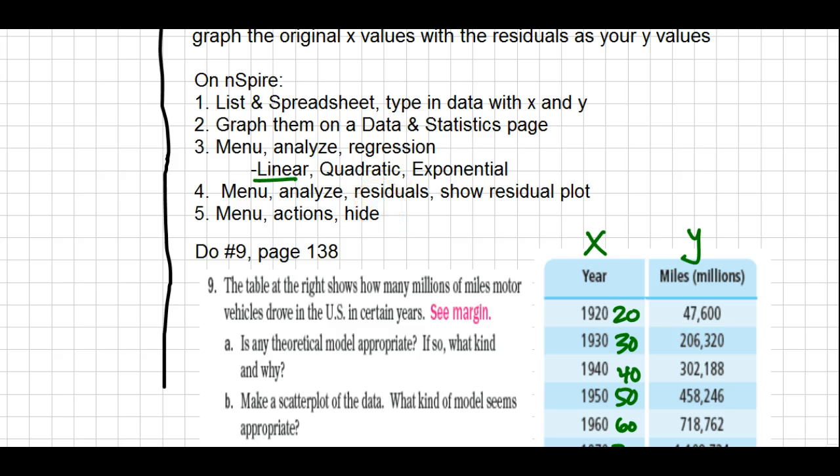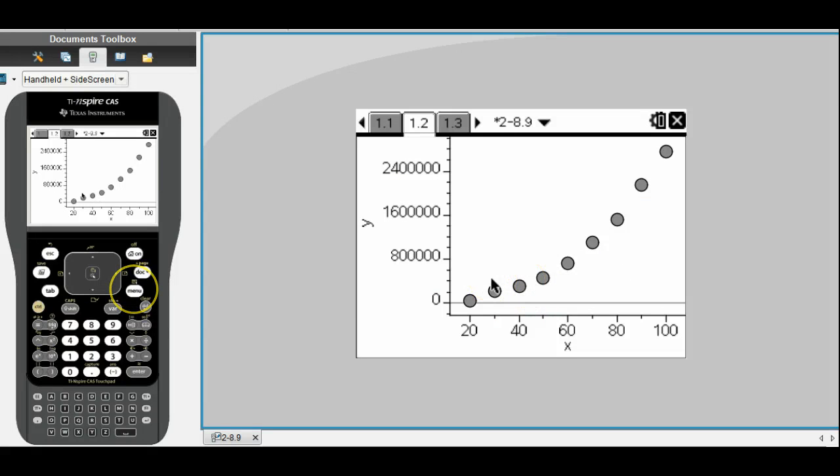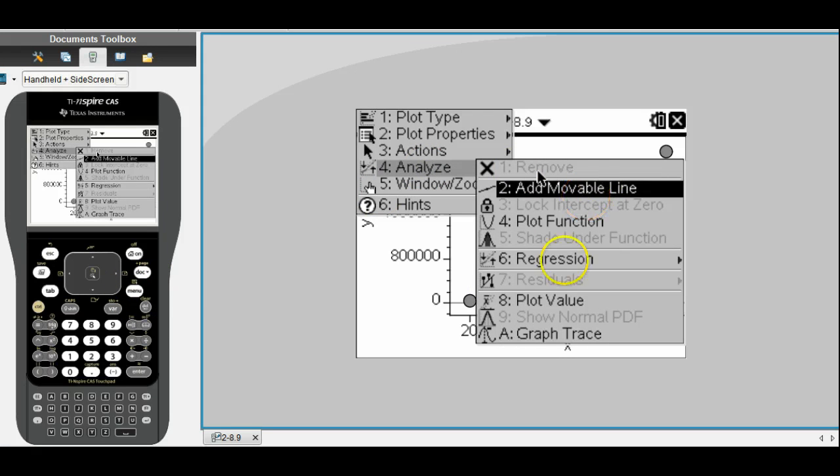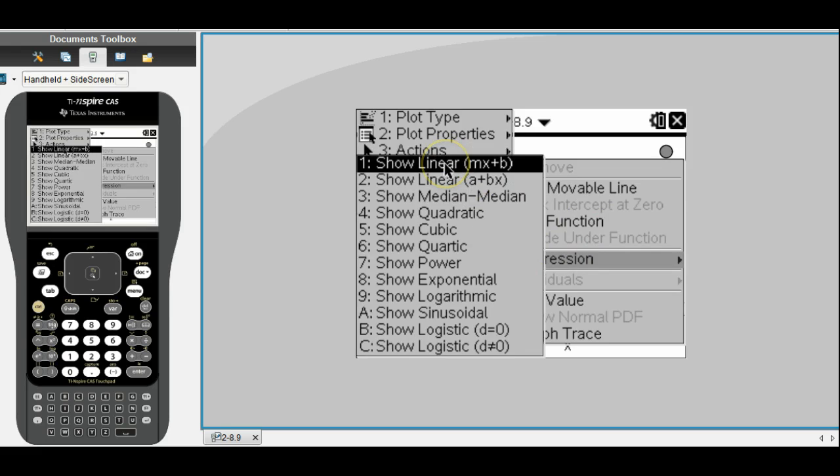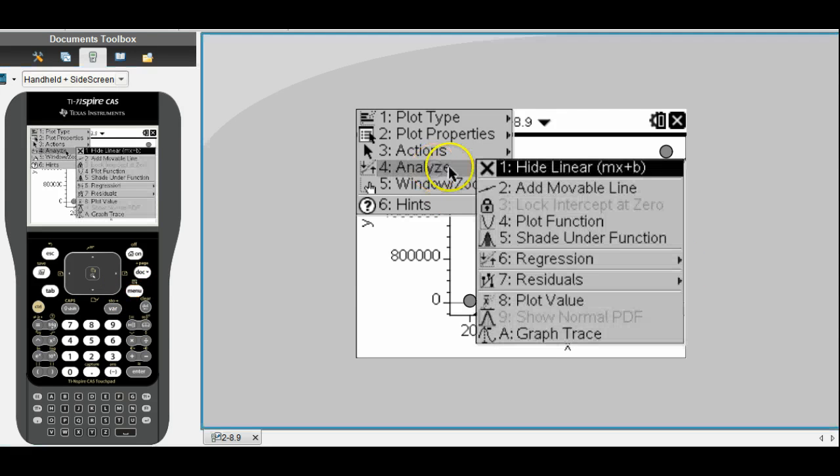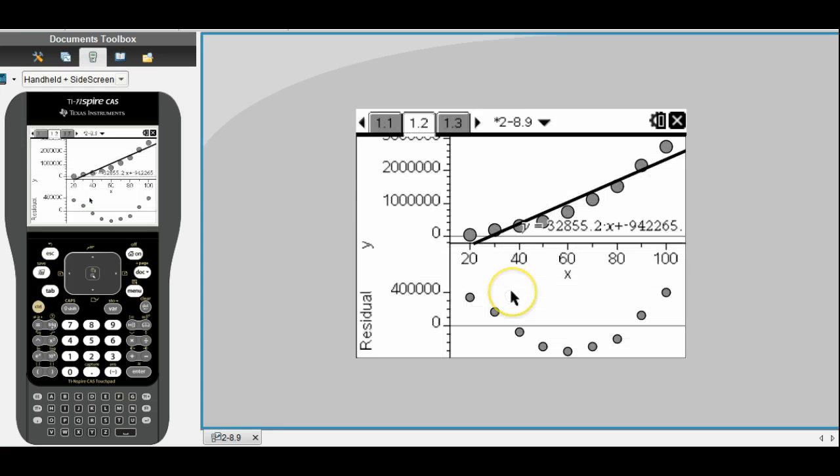From here, I'm going to do menu analyze regression, and I'm going to choose linear to start. Now I think linear is probably not a good model here. I think quadratic or exponential might be a better choice. But just for the sake of practice, I want you to try all three today. You'd copy down this equation as the linear model. Now we're going to do menu analyze residuals and residual plot to get the actual residual graph. Then you'd copy down that graph as well.